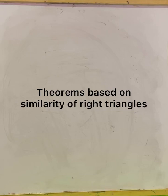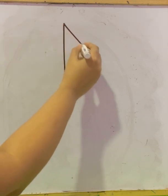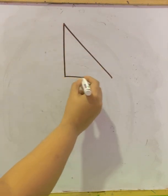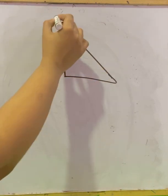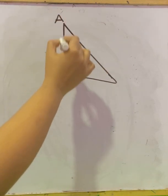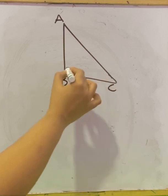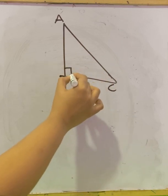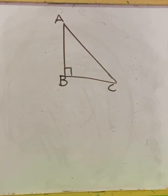Namaste. Today we will learn some theorems based on similarity of right triangles. So let us draw a triangle first that is right angled. Let this be A, B and C, with a right angle at B.